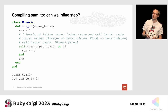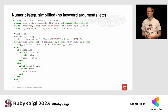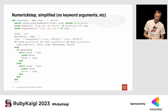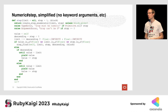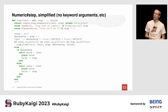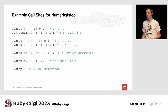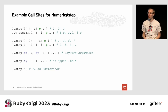The compiler then looks at numeric#step, and it's huge — it doesn't fit on a slide. This is a simplified version that doesn't handle keyword arguments and some edge cases. The reason numeric#step is so complicated is because you can call it in many different ways — and this happens for many other core methods in Ruby, like array bracket or string bracket.